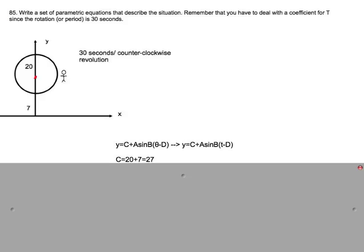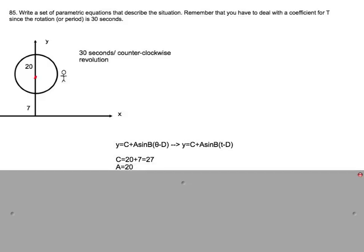The sinusoidal axis is C, which is 27 because you have to add the radius 20 plus how far the Ferris wheel is off the ground, which is 7. The amplitude is A, which is 20.